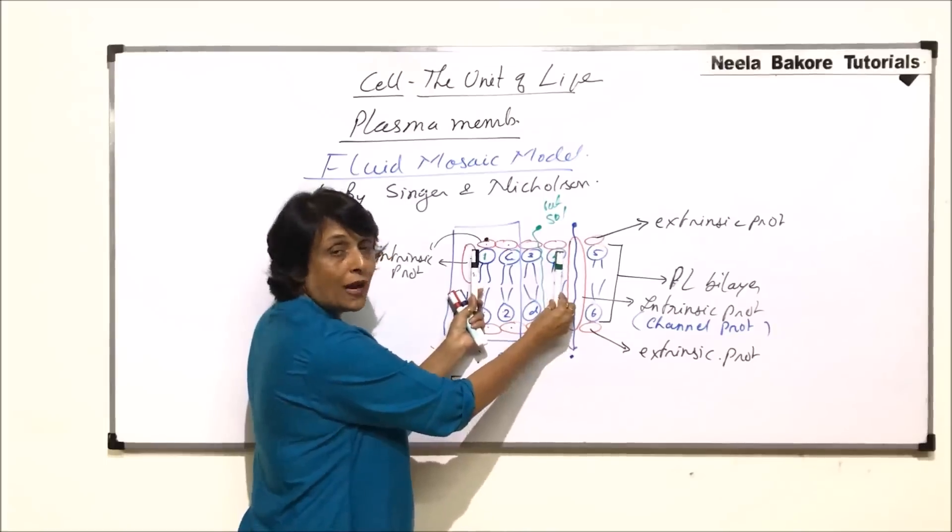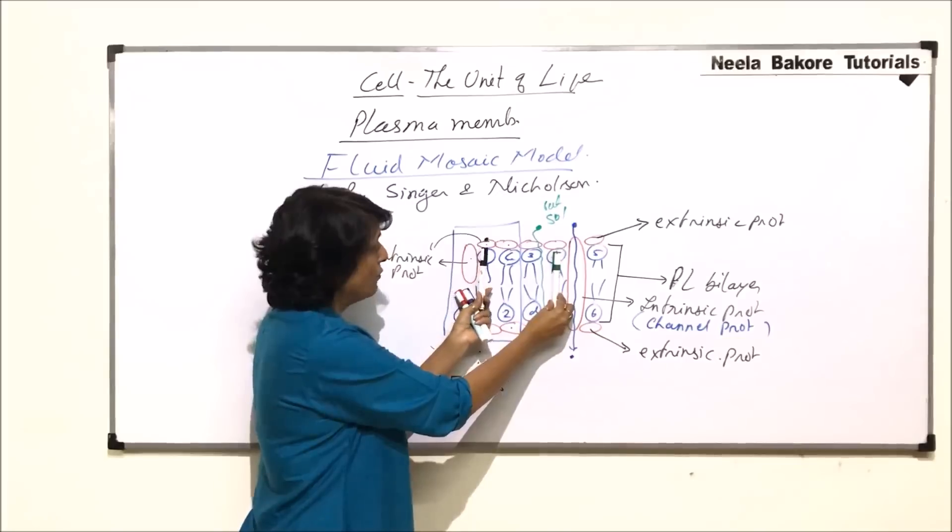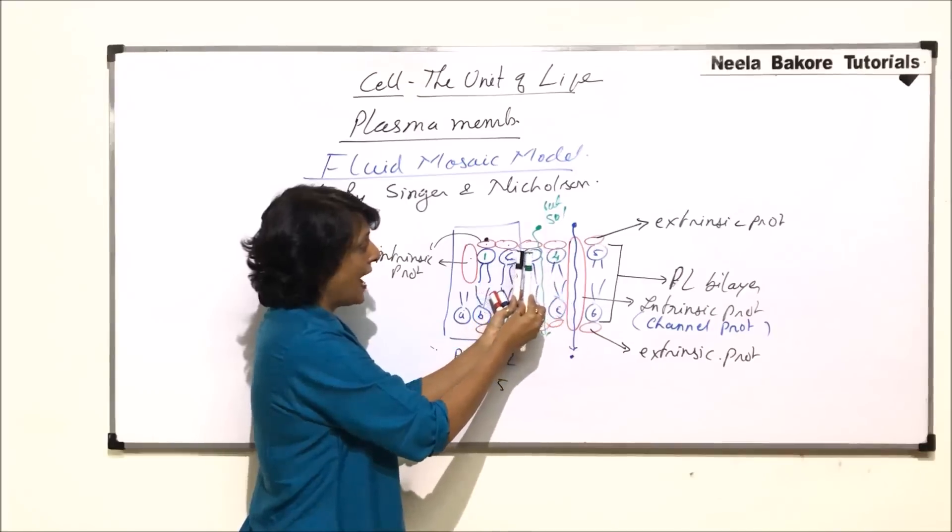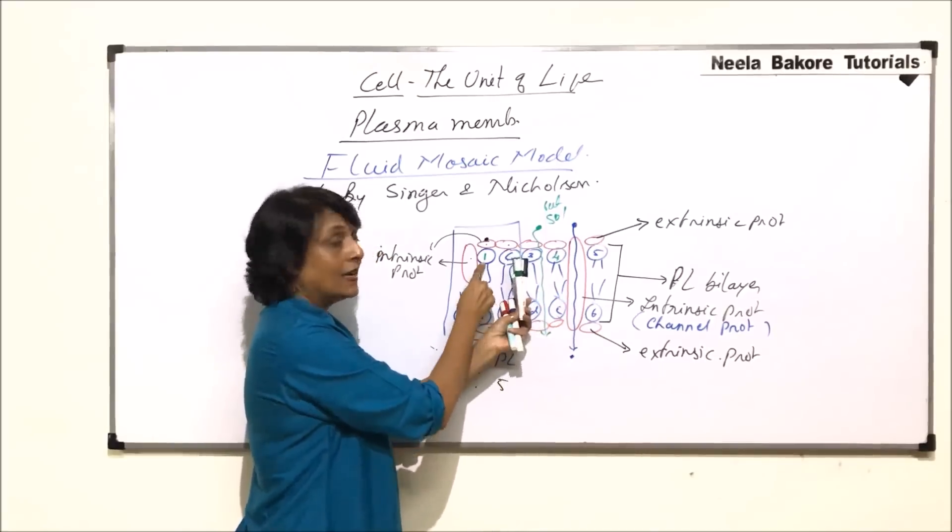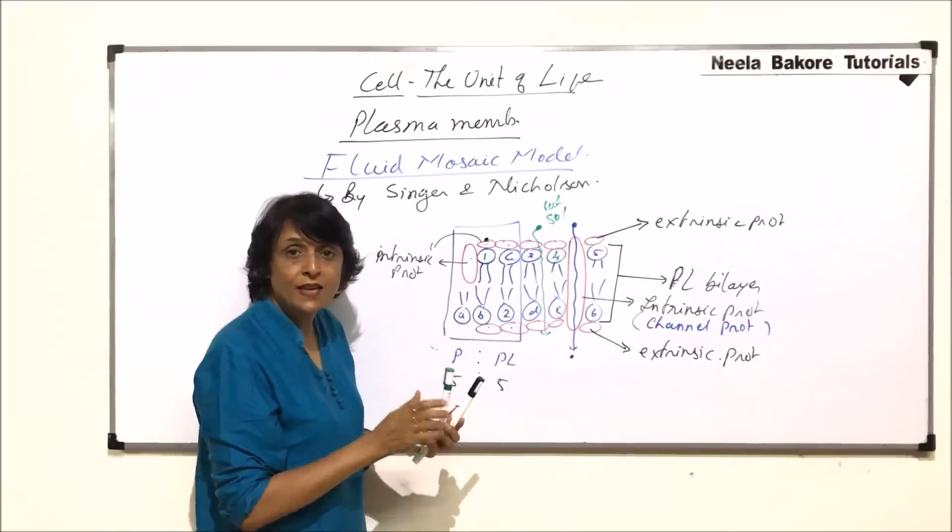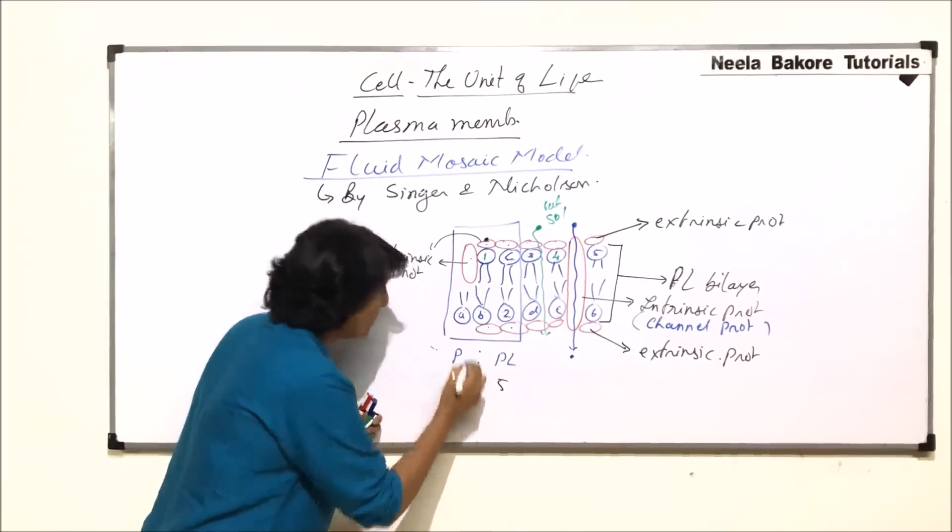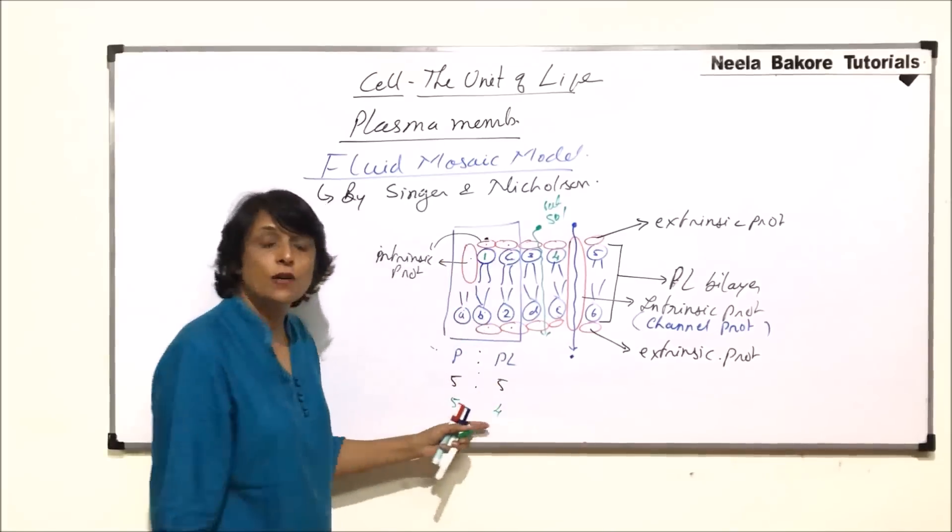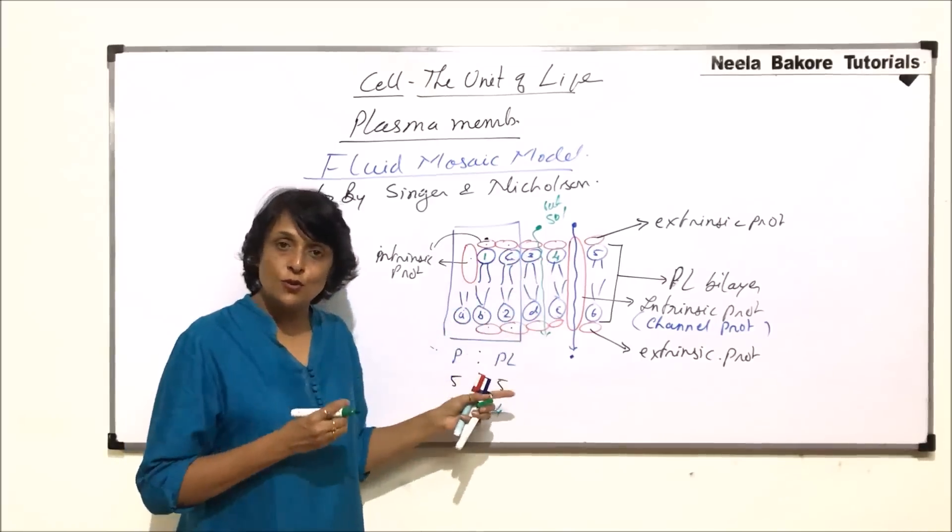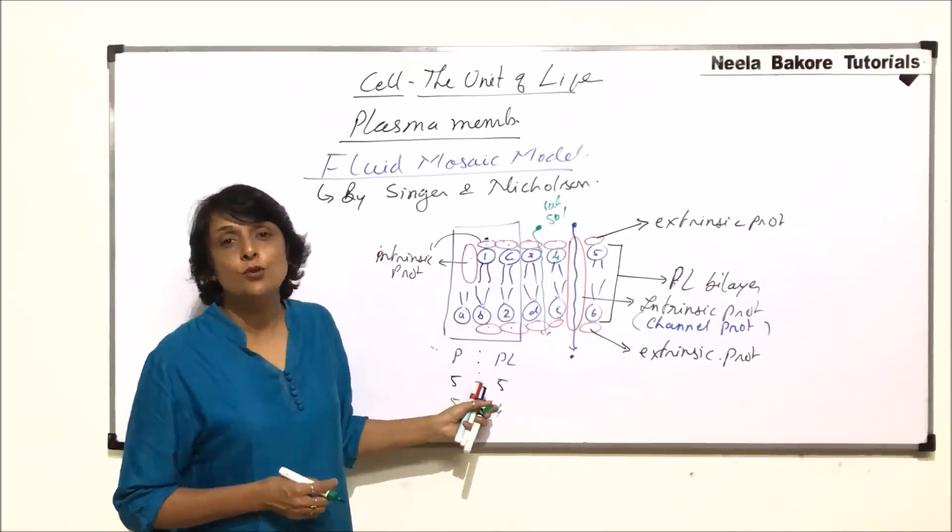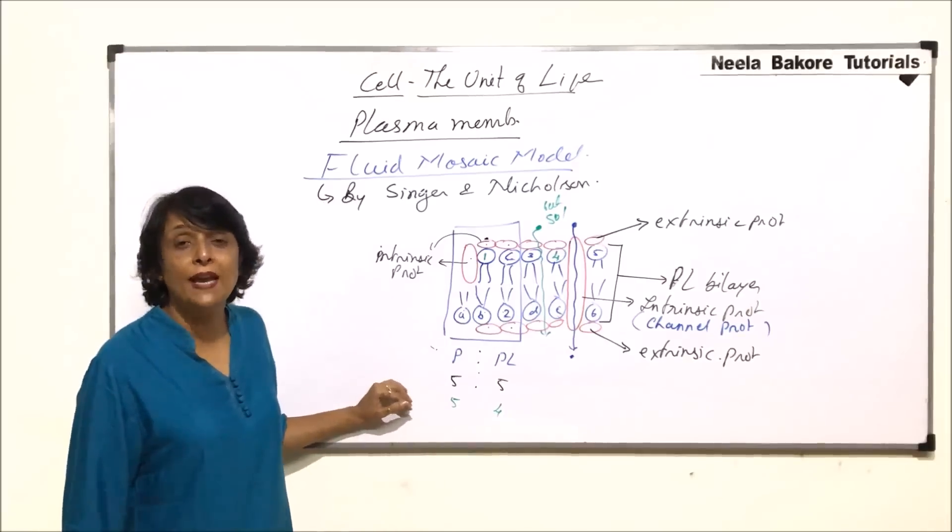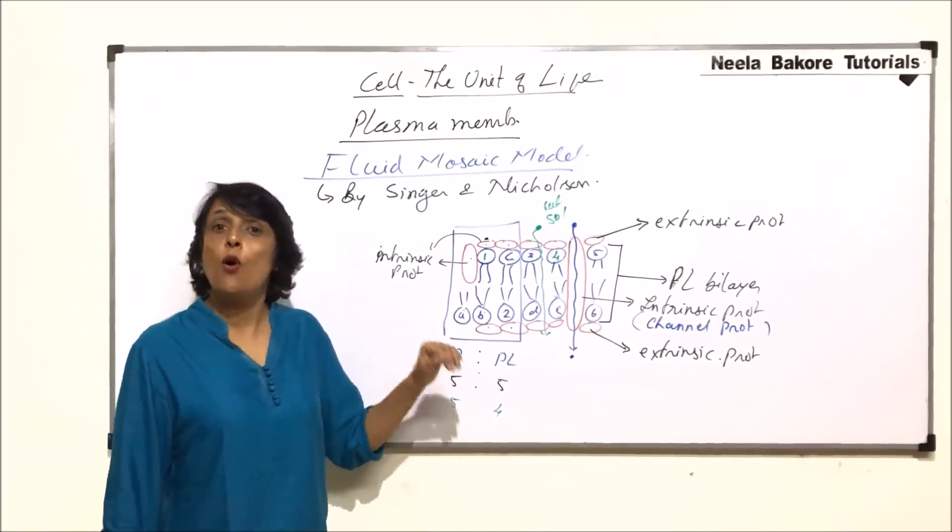This is phospholipid number one. This is phospholipid number four. They are showing transition movement. This first protein moves from its position. Four is also going to come here. At this moment, one is not here, four has not reached here. That means there is no phospholipid at this time. So has the number gone down? The proteins are as it is. Phospholipid has gone down to four. Ratio has changed. So if phospholipids are moving, ratio is going to change. If proteins are moving, then the ratio is going to change. That means this model explains variable protein to phospholipid ratio also.